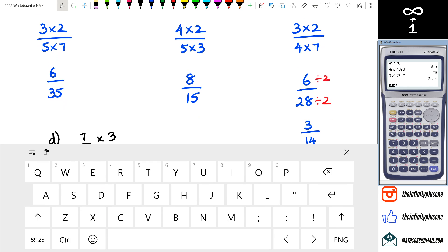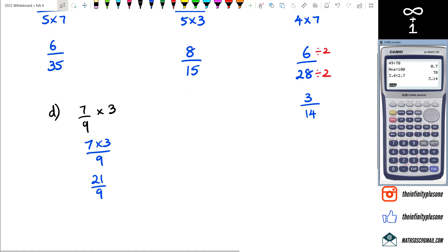And once again you can see with 21 over nine, they do have three as a common factor, so 21 divided by three is seven, nine divided by three is three. And of course you could leave it as a mixed fraction or an improper fraction, but really there's just another way of looking at it as well.